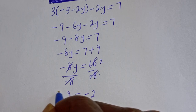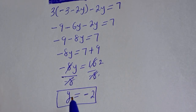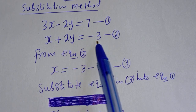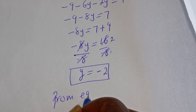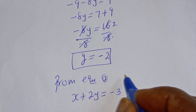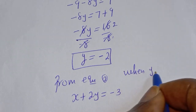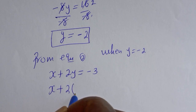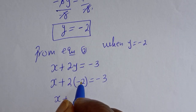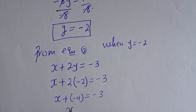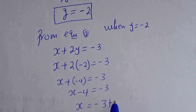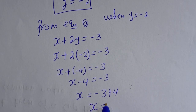Now we've gotten the value of y. Let's substitute for y in equation 2 to get the value of x. From equation 2: x plus 2y is equal to minus 3. When y is equal to minus 2: x plus 2 bracket (minus 2) is equal to minus 3. So x minus 4 is equal to minus 3, therefore x is equal to minus 3 plus 4, which gives x is equal to 1.